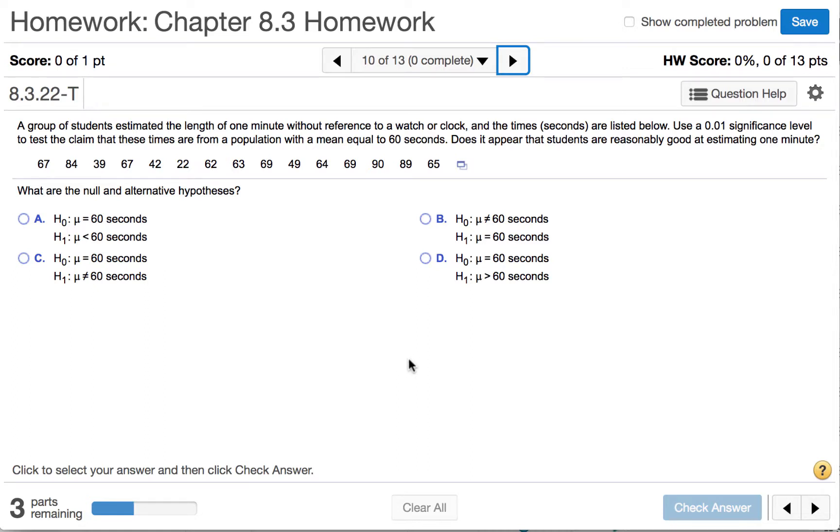A group of students estimated the length of one minute without reference to a watch or clock, and the times in seconds are listed below. Use a 0.01 significance level to test the claim that these times are from a population with a mean equal to 60 seconds. Does it appear that students are reasonably good at estimating one minute?